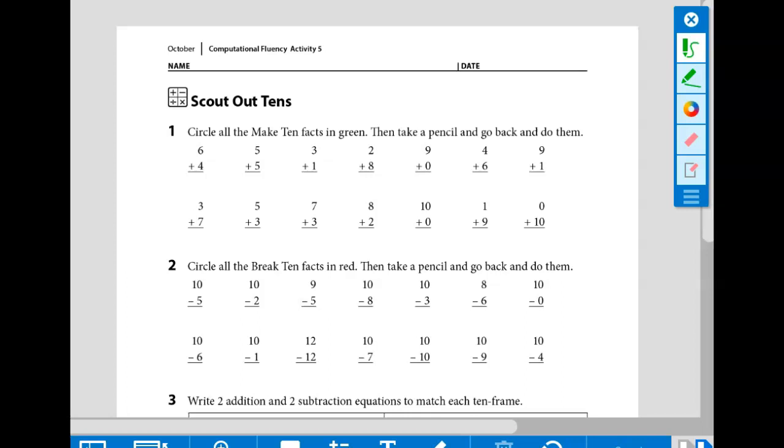Let's look at these problems together. Number one says circle all the make 10 facts in green. Then take a pencil and go back and do them. Now remember, our make 10 facts are facts that equal 10.